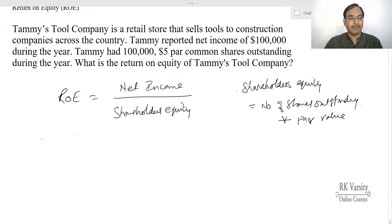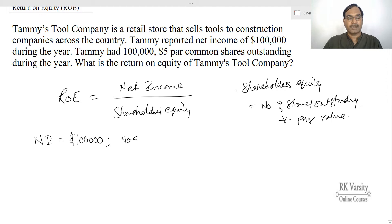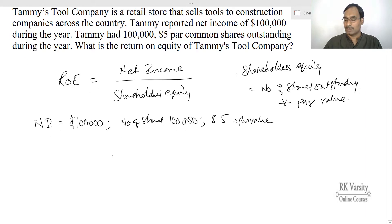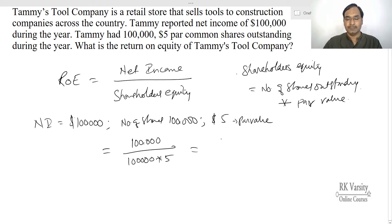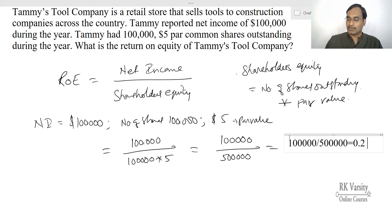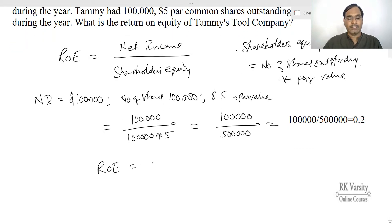Shareholders equity equals number of shares outstanding times par value per share. In this example, net income reported is $100,000, number of shares is 100,000, and par value per share is $5. So Return on Equity equals $100,000 divided by (100,000 shares × $5), which equals $100,000 divided by $500,000, which equals 0.2, or 20%.